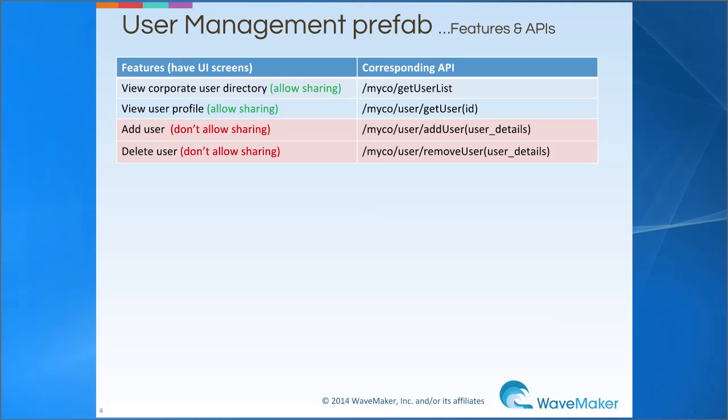For example, consider a user management application with four simple features: View Corporate User Directory, View User Profile, Add User, and Delete User. For security reasons, the add and delete user functionality needs to be hidden from the app user.